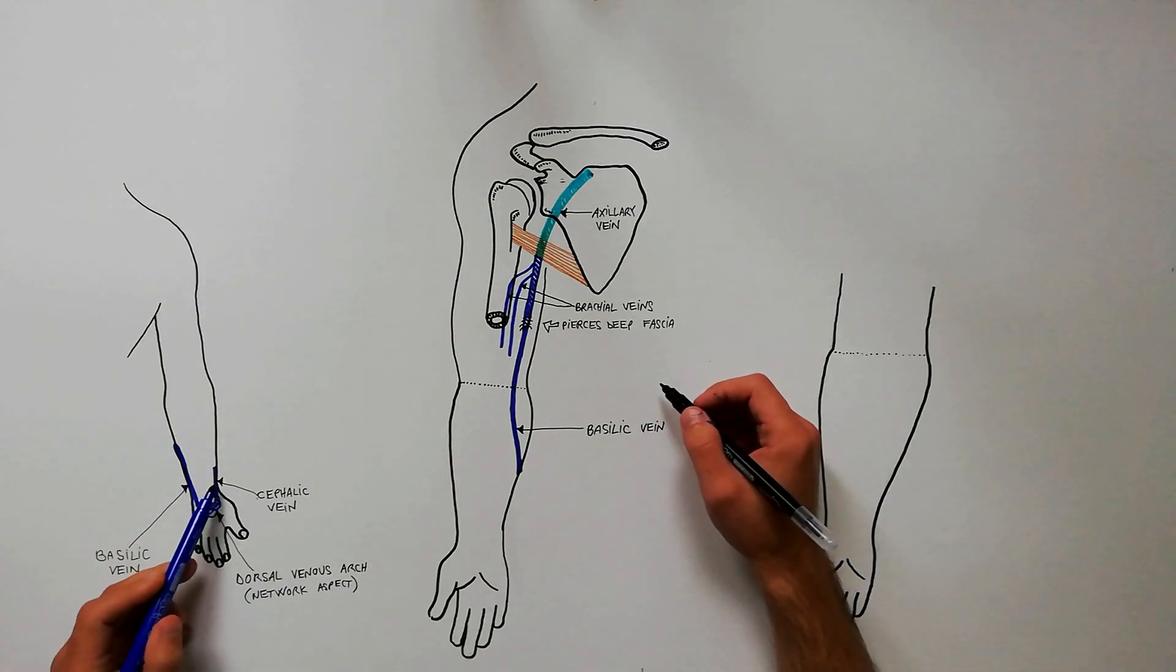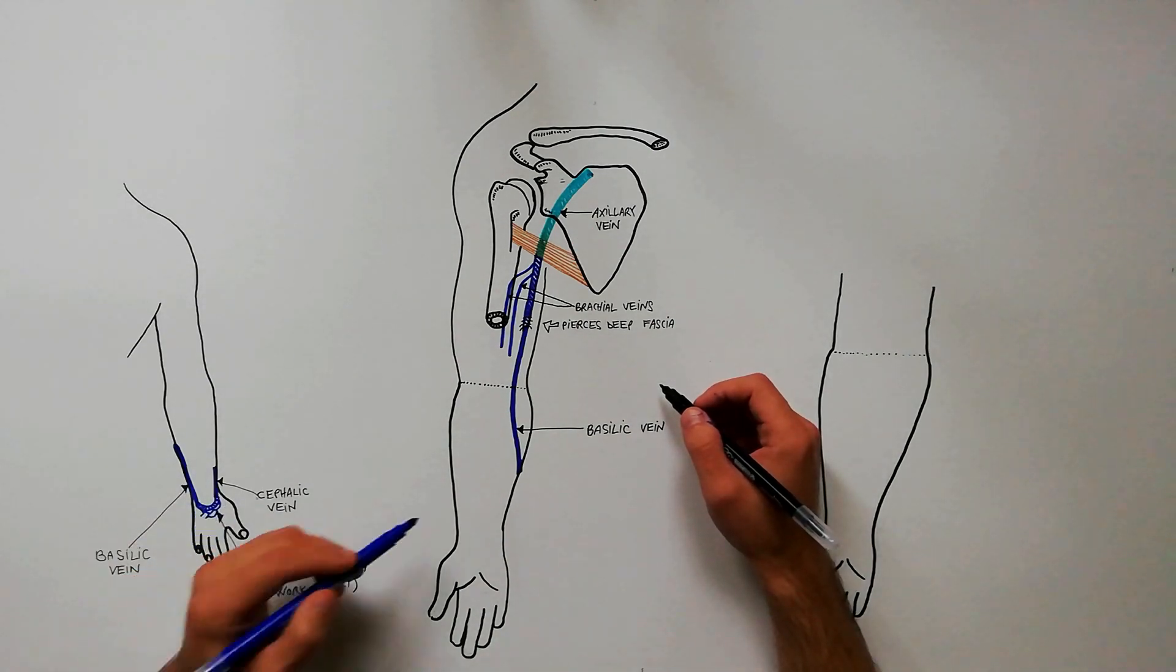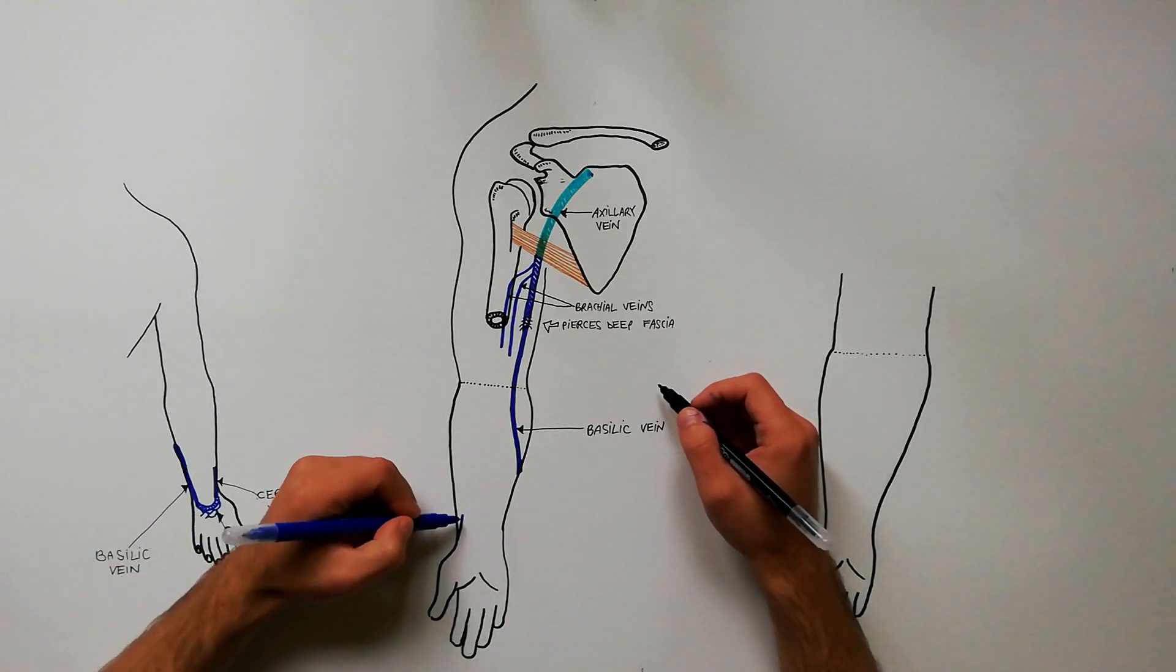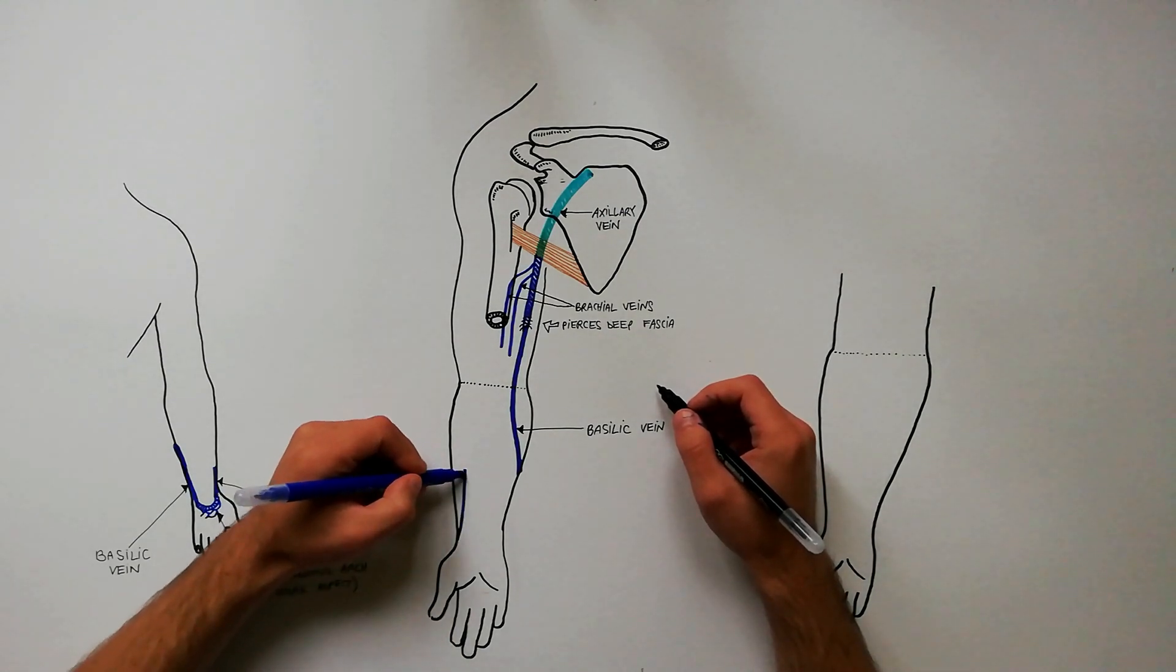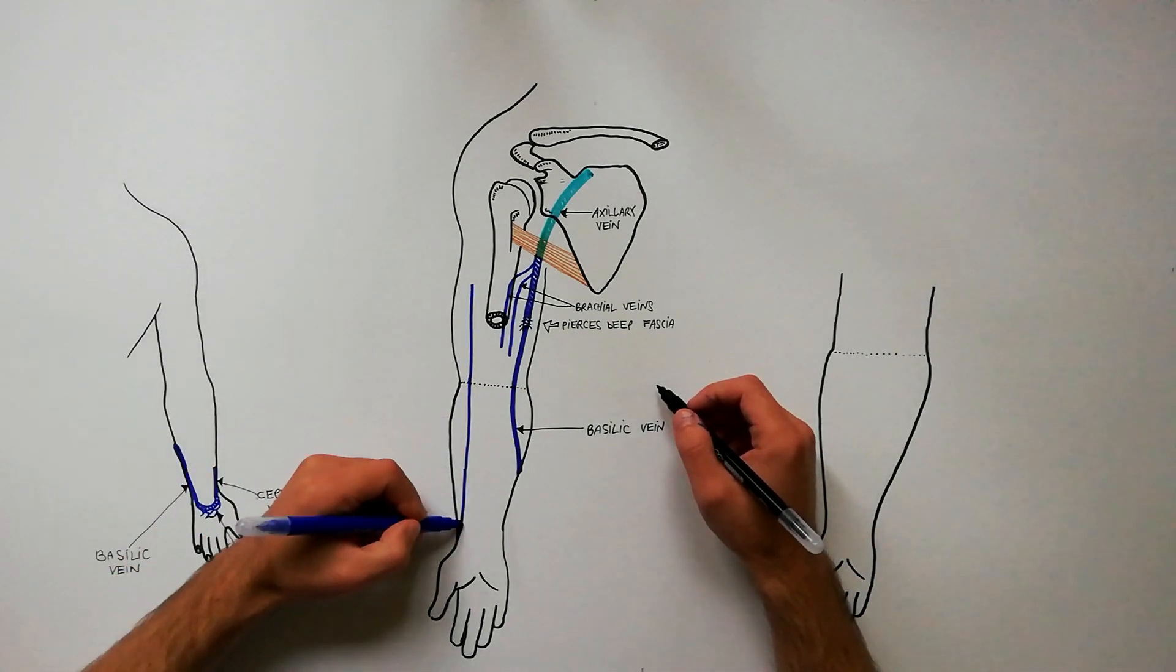From the radial aspect of the dorsal venous arch, the cephalic vein arches around the radial aspect of the forearm to course through the anterolateral forearm.